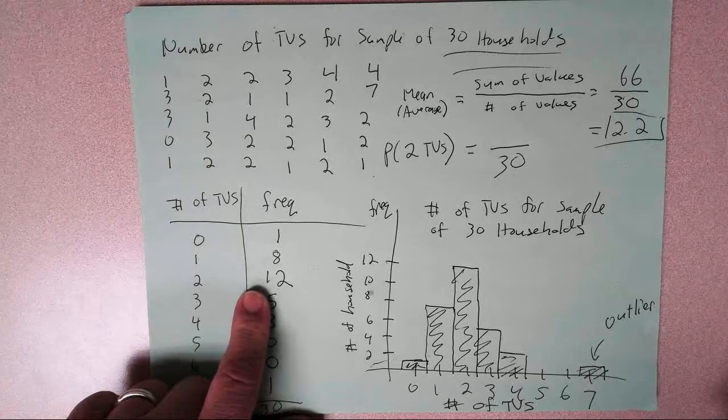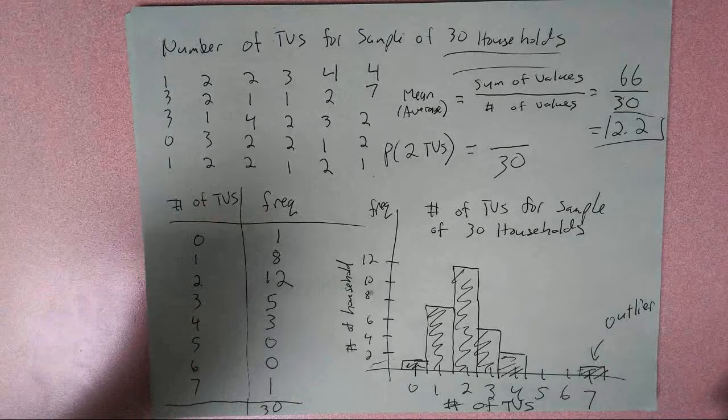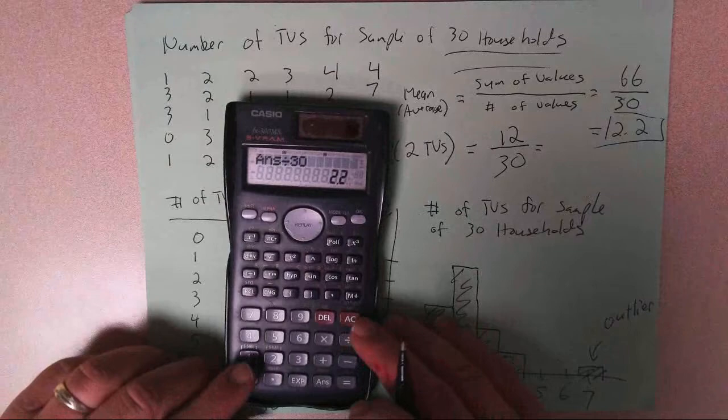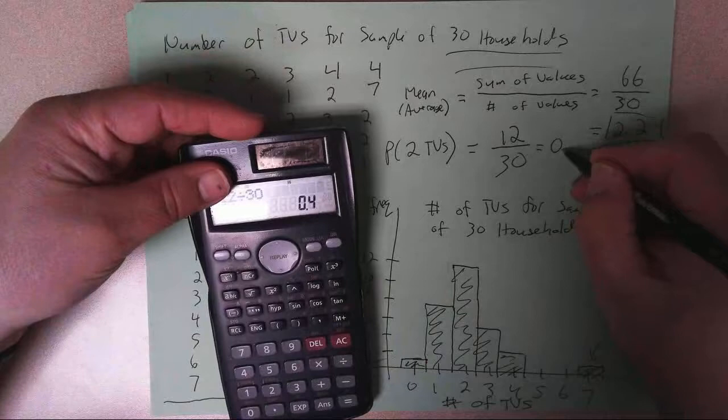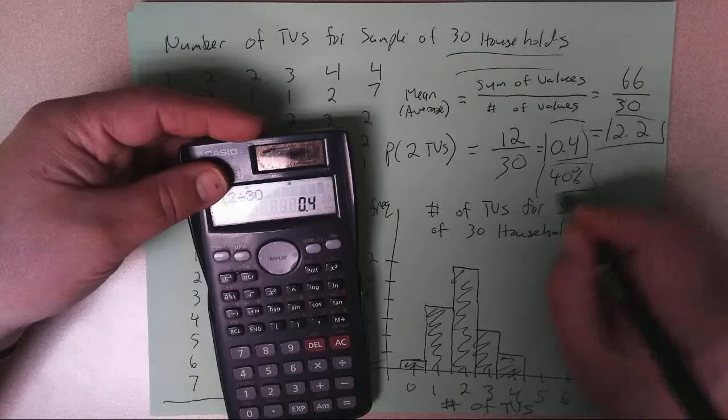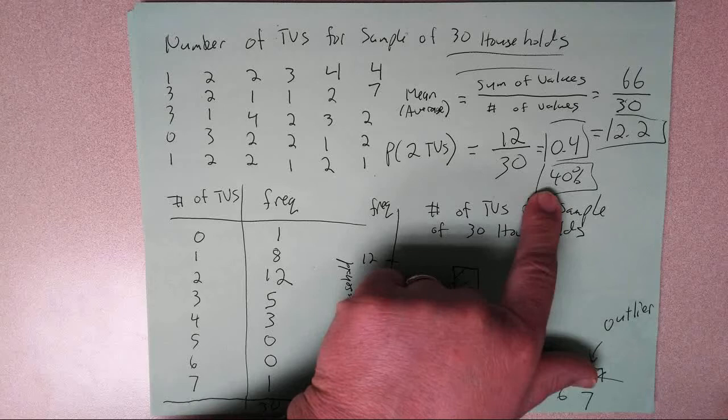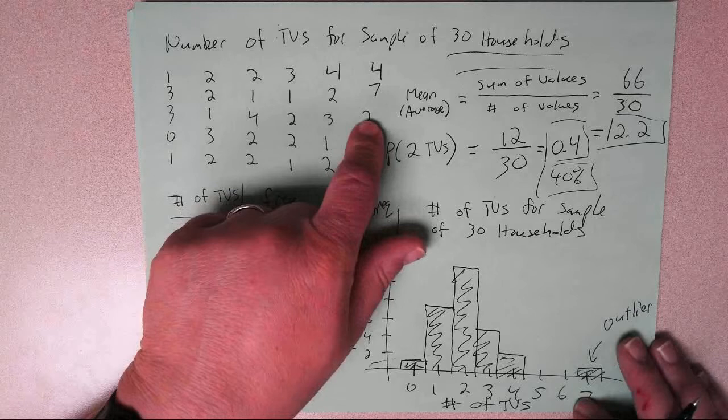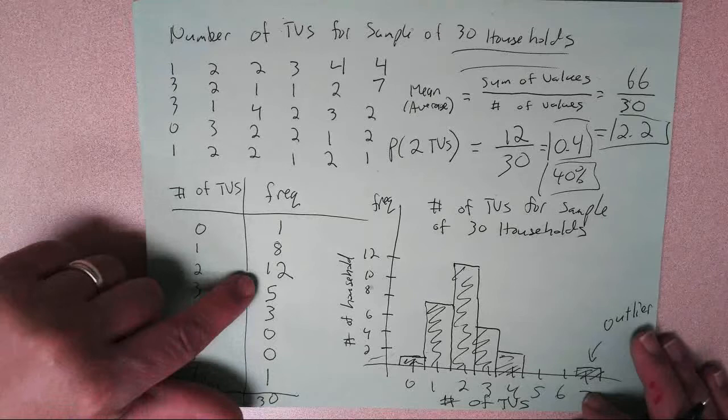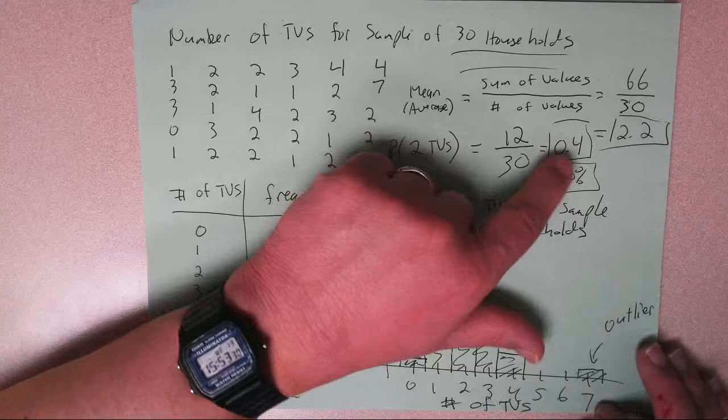And then out of those 30 names, when I draw, what are the chances that that name I'm going to draw has 2 TVs? Well, I need to know how many names have 2 TVs. Well, there's 12. 12 of the 30 names in the hat have 2 TVs. So my top number is 12. And so what I get here is 12 divided by 30 is 0.4. And so you can almost think of that as a percentage. There's a 40% chance that I'm going to draw someone's name that has 2 TVs.